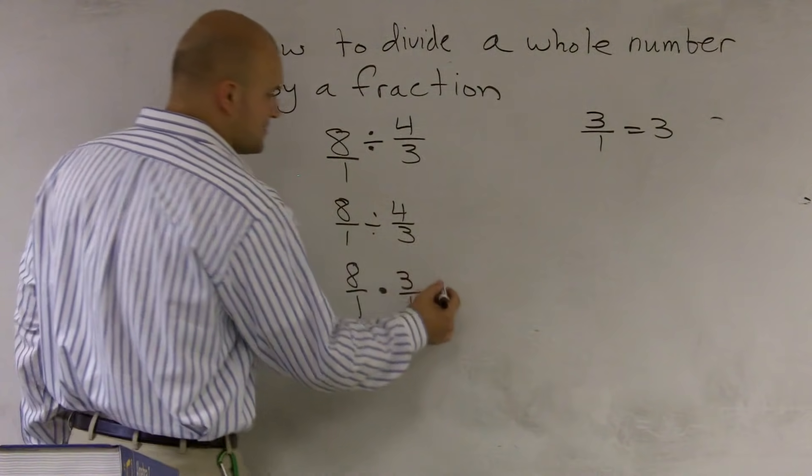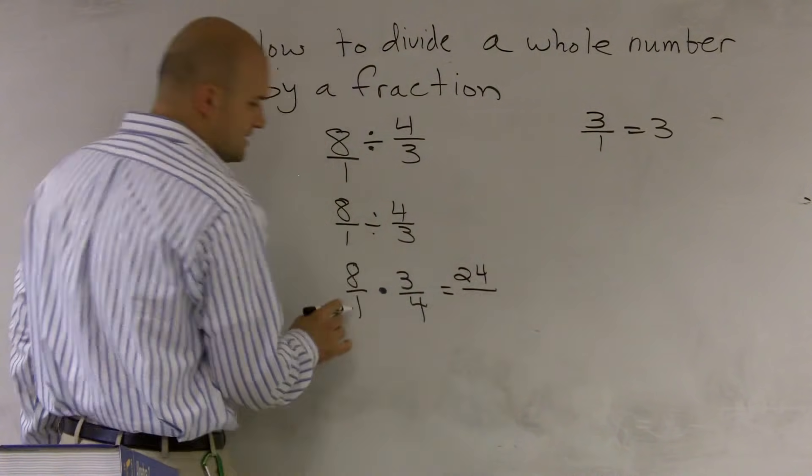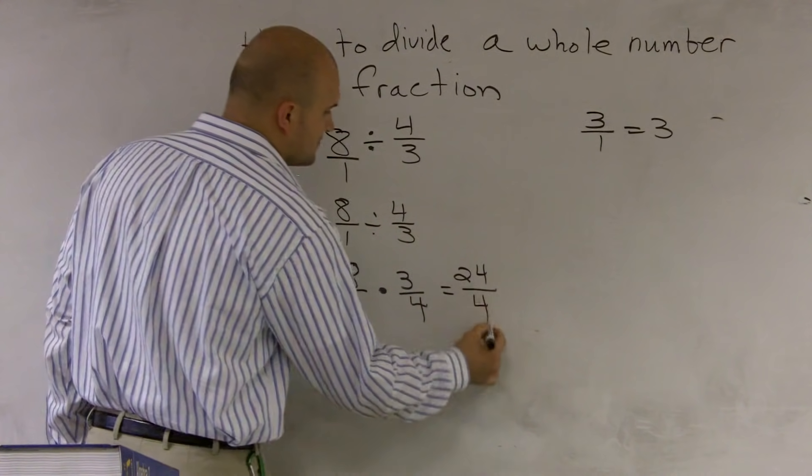Remember, your numerator times your denominator becomes 24. Denominator times your denominator becomes 4.